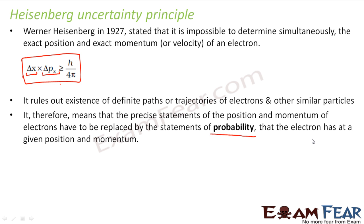Whenever we talk about the position of the electrons, the motion of the electrons around the nucleus, whenever we talk about atomic structure, we are basically talking about the distribution and movement of electrons around the nucleus. So we can never use precise statements that electrons will move in this orbit, electrons will have a fixed radius. We will always have to use probability — there is a probability that the electron will be at this position, a probability that the electron will move with this much velocity. Every time there is probability and no accuracy.